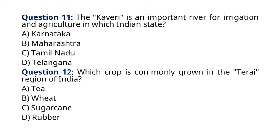Question 12: Which crop is commonly grown in the Terai region of India? A. Tea, B. Wheat, C. Sugarcane, D. Rubber. The correct answer to question 12 is option C, Sugarcane. The Terai region, located at the foothills of the Himalayas, is suitable for the cultivation of sugarcane due to its fertile soil and favorable climate.